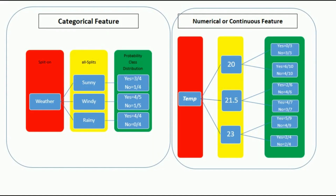Entropy is a measure of randomness. If in a split the data is completely random then we can say that entropy is high. For the 21.5 split, the higher side has 4 out of 7 yes and 3 out of 7 no — that node is completely random, so entropy is very high. Whereas in the weather split's rainy part we have 4 no and 0 yes — a pure node — so entropy will be 0. Wherever I get the least entropy, that will be my best split.